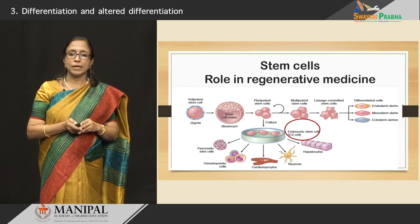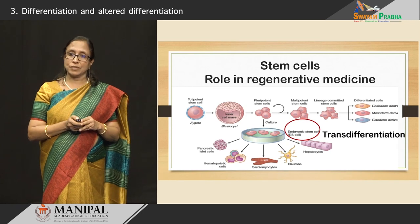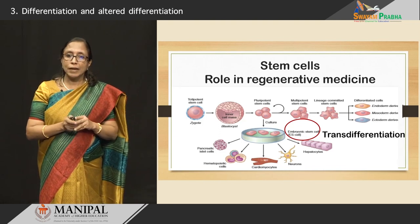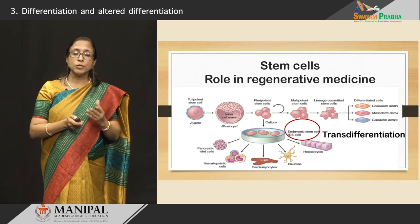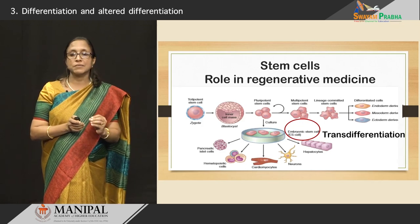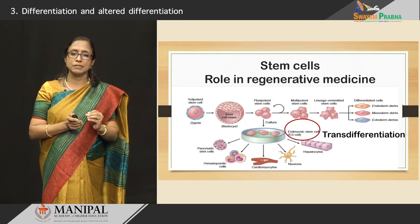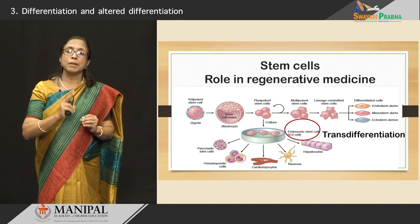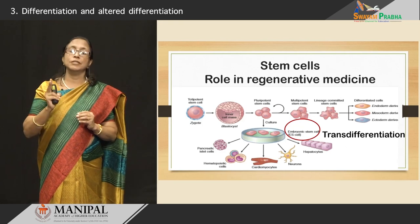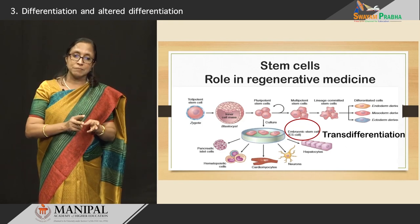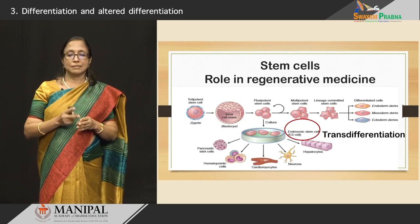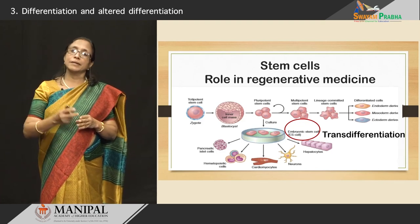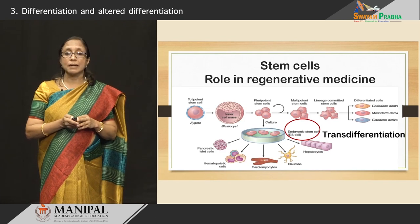Another area linked to differentiation is transdifferentiation. When we have differentiated cells like hematopoietic stem cells, a lot of work has been done showing these hematopoietic stem cells can be reprogrammed so that they develop into other types of differentiated cells. A hematopoietic stem cell can become a cardiac cell or a neuron, and so on, so that they can be used to repair damaged organs. That is what we mean by transdifferentiation.